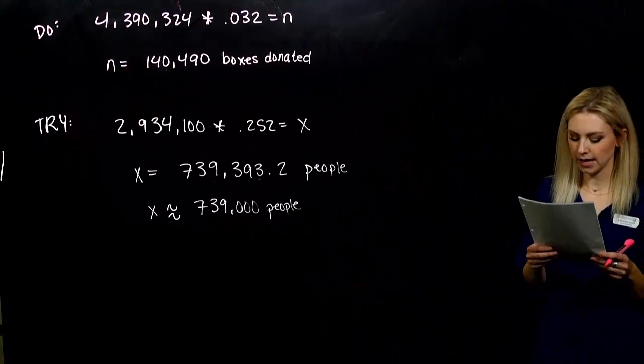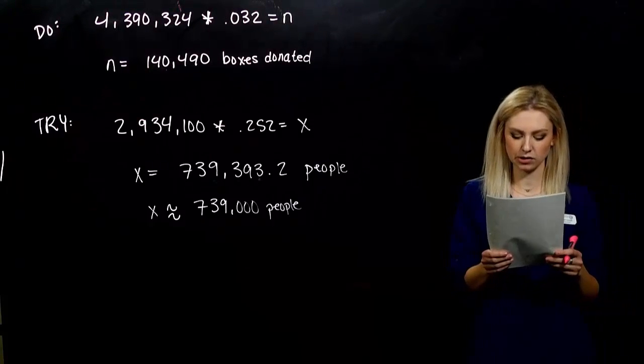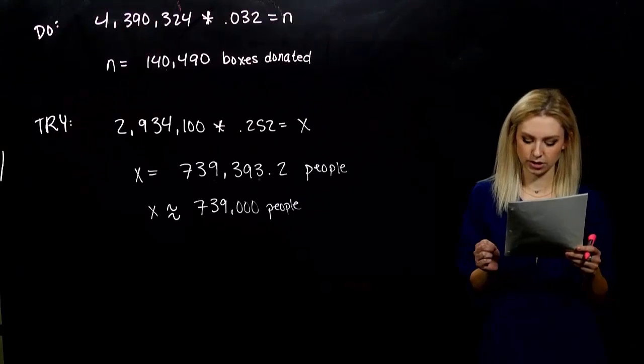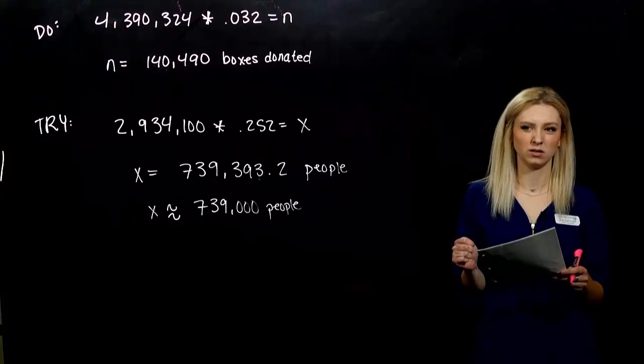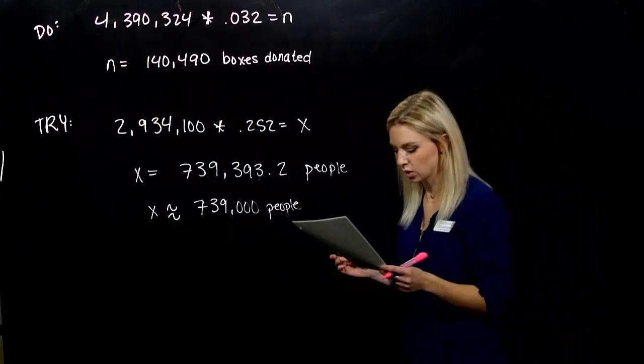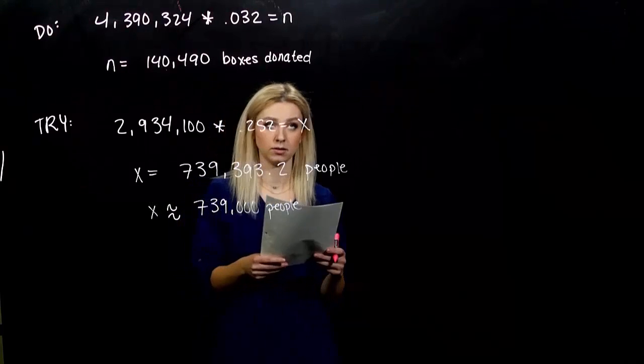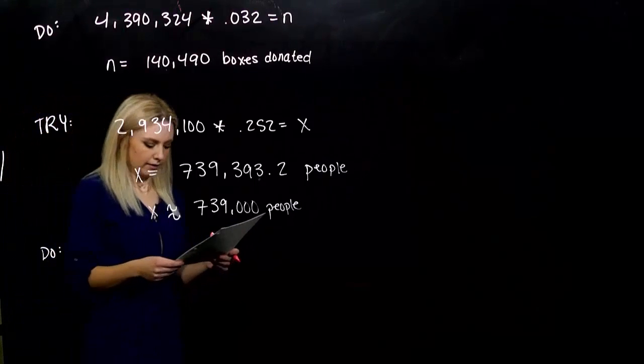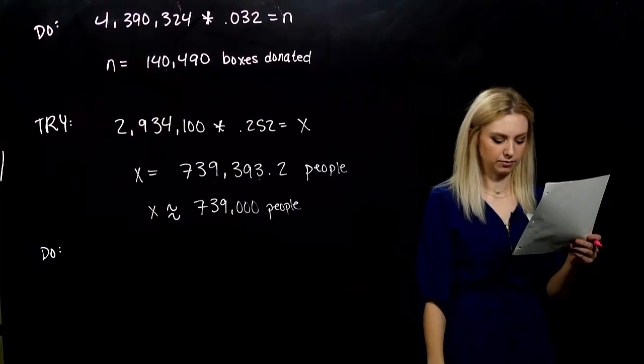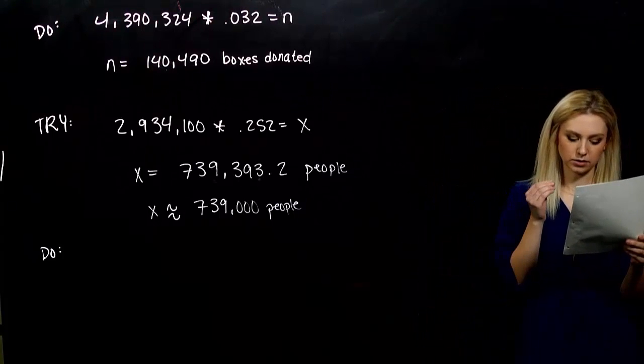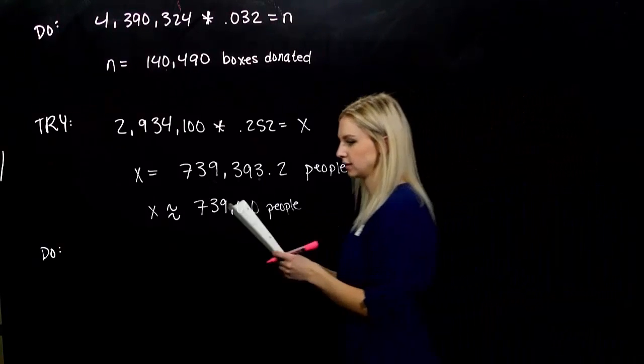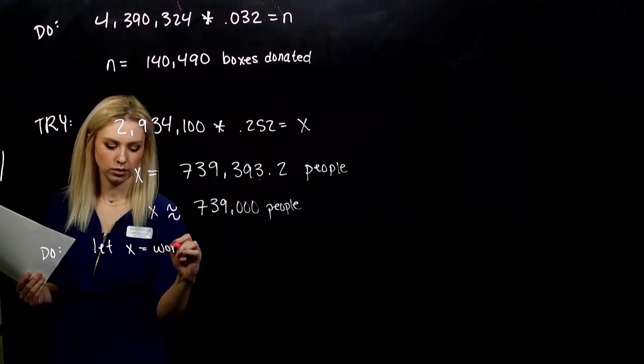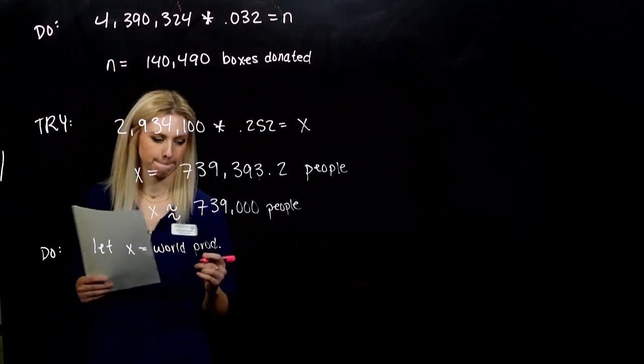Okay. Next. 2010. 8.32 million cars were made in the U.S. This was 13.4% of the world production of vehicles. That's really small. So, anyway, how many vehicles were produced worldwide in 2010? This is going to be interesting. So, I'm going to let a variable represent what we're trying to solve for. So, I'm trying to figure out how many vehicles were produced worldwide in 2010. So, I'm going to let X be world production.